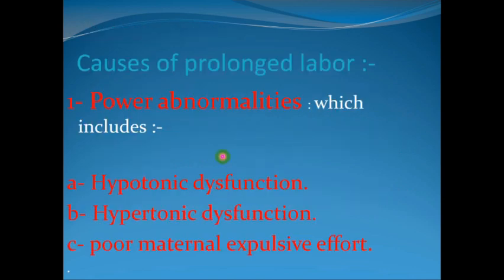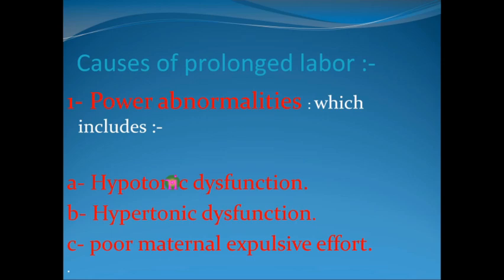The causes of prolonged labor: first, abnormalities in the power — uterine contractions. There are three types. Hypotonic dysfunction means fewer than three uterine contractions per 10 minutes, each lasting less than 45 seconds. Hypertonic dysfunction means more than three contractions per 10 minutes but they are non-synchronized and arrhythmic or irregular.